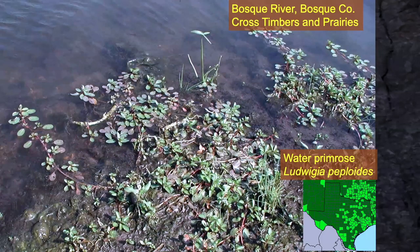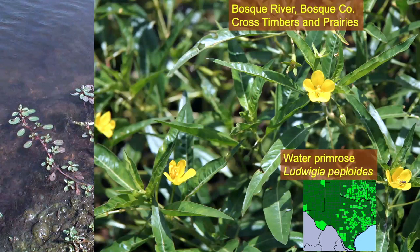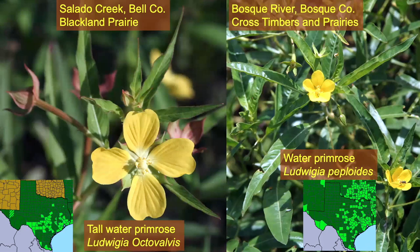Water primrose undergoes a transition in its leaf structure throughout the summer. Early in spring when it first starts growing, the leaves are spoon-shaped and rounded. Later, about mid-summer, those leaves become pointed and look like maximilian sunflower leaves with a V-shaped keel. There's also one called tall water primrose — notice the petals are one short compared to water primrose. South and east Texas are where they're most commonly found.